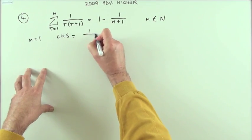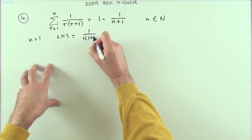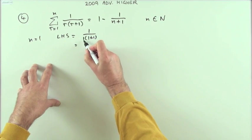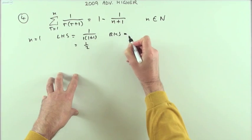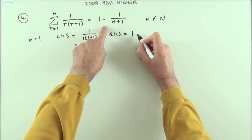If n is one, I'm going to evaluate this with the floating variable r going from one to one, so there's only going to be one term. That'll be the term when r is just one: one over one plus one, that's one times two, which is a half.